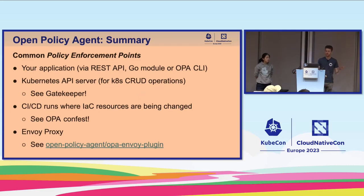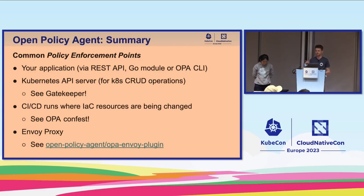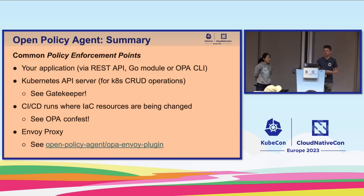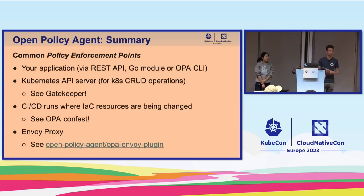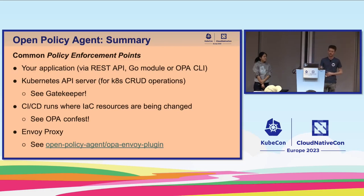It can be an application that you've built and you're calling it via the REST API or using an SDK. It might be the Kubernetes API server calling your OPA or Gatekeeper instance and making an admission check or mutating some resources as they're landing in your cluster. It might be a CI/CD run making a check against some configuration about to be deployed to a public cloud. Or it might be the Envoy proxy external authorization integration, and we have a specific plugin related to that too.